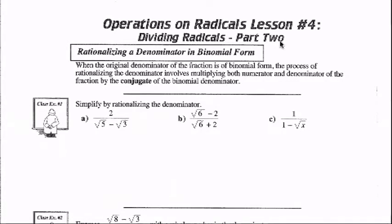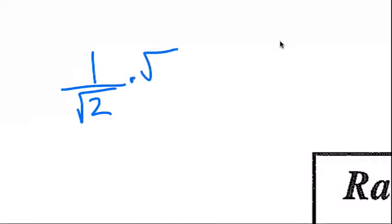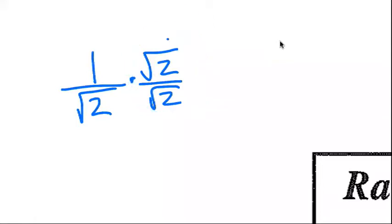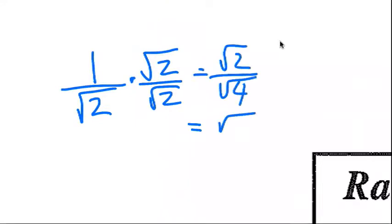And I alluded to this already. Last class, we were looking at rationalizing the denominator of radicals when the denominator had a radical that was a monomial. And in order to rationalize that, we would multiply by that radical over that radical. Now, this is essentially one, so we're not really changing the question at all — we're just changing what it looks like. And then when we multiply that out, we would get square root 2 over square root of 4, and the square root of 4 is 2, so the radical in the denominator disappears.